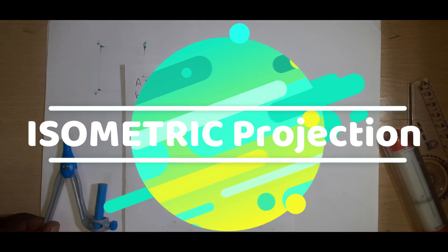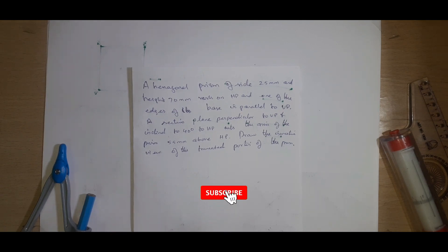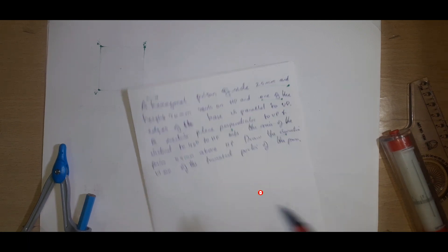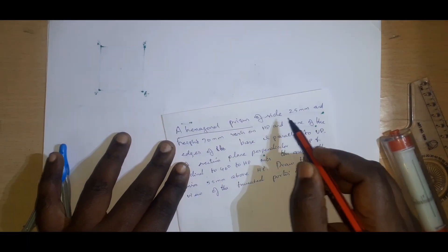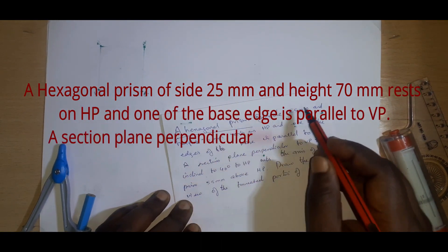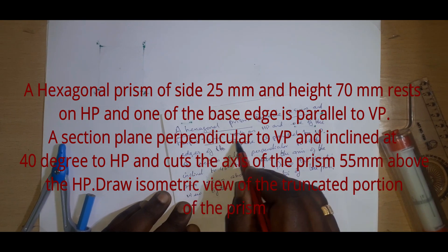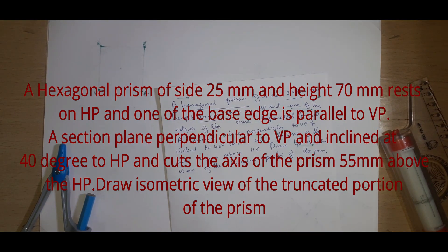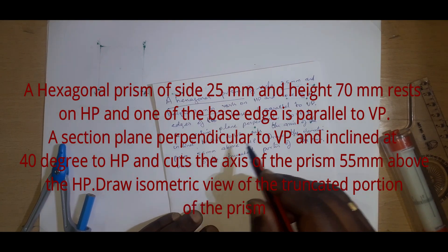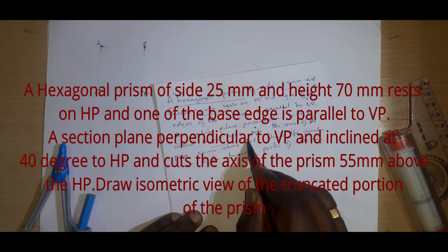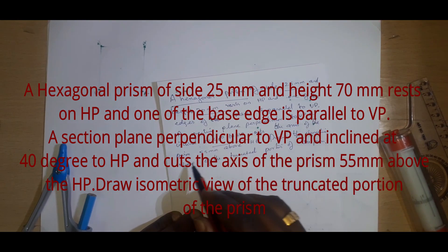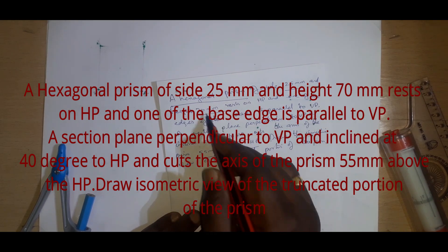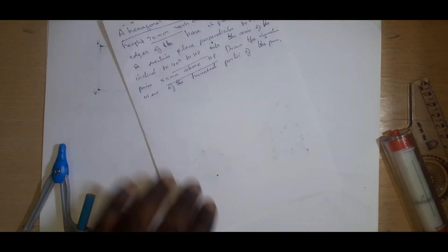Hello students. In this video we are going to see a hexagonal prism isometric view. Here we can look at the question. It is given as a hexagonal prism. Hexagon means it has 6 sides — base and top. The base side is 25mm and axis height is 70mm. One edge of the base is parallel to VP, and an inclined section plane is perpendicular to VP and 40 degrees inclined to HP. It cuts the axis of the prism 55mm above the HP. So draw the isometric projection.